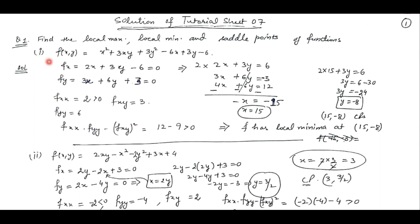Now see question number 1, part 1. Here you are having a function of two independent variables. We first find out the partial derivative of the function with respect to x and y. The derivative with respect to x is 2x plus 3y, and its constant terms have derivative 0, minus 6, giving us 2x plus 3y minus 6 equals 0. Similarly, the partial derivative with respect to y gives 3x plus 6y plus 3 equals 0.